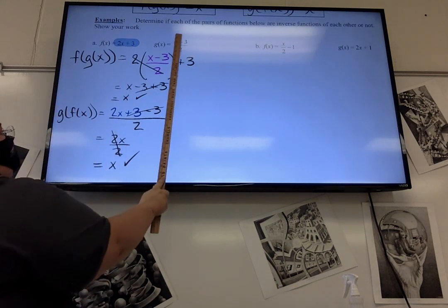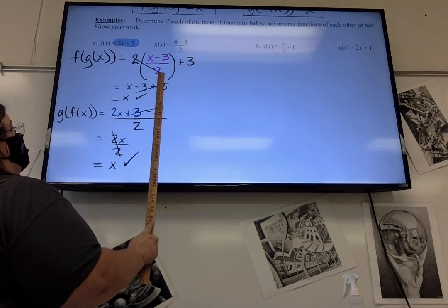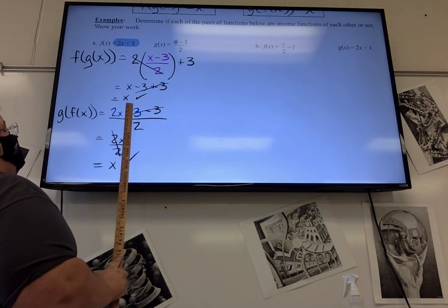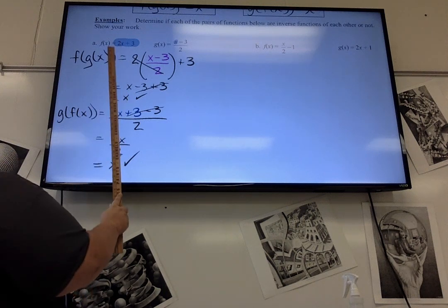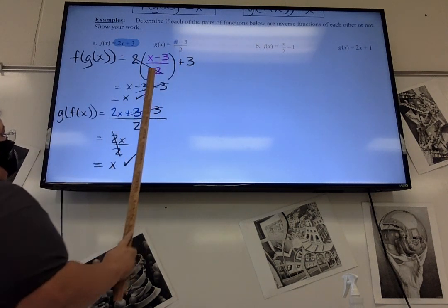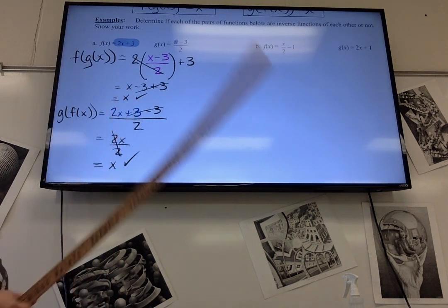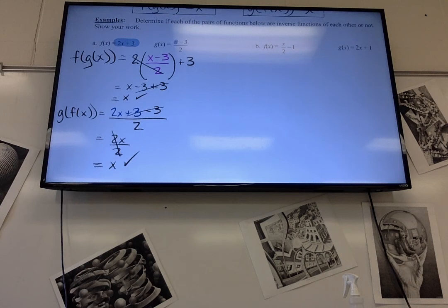So we put this right there. And notice how stuff cancels out and you end up with x. And if I did it the other way, so if I took this and put it right there, then still stuff cancels out and we get x. That's always going to happen if they're inverses of each other, both of them.